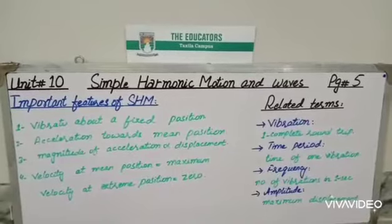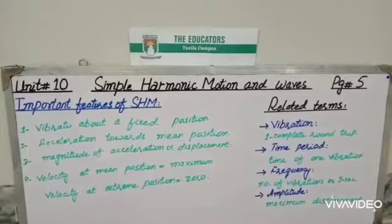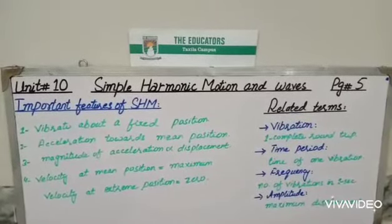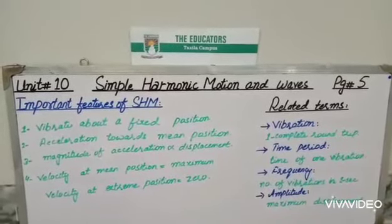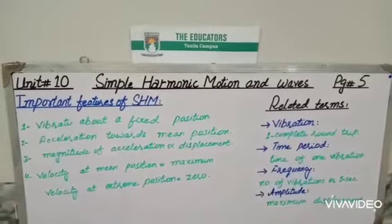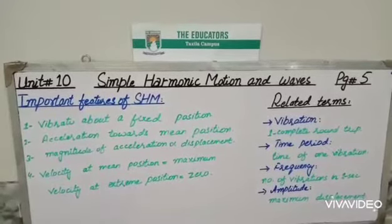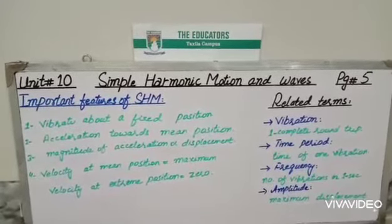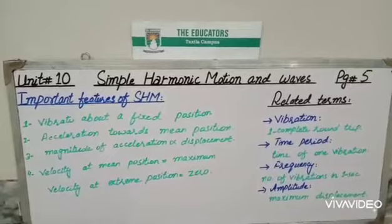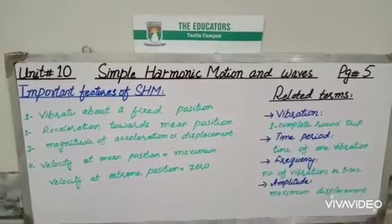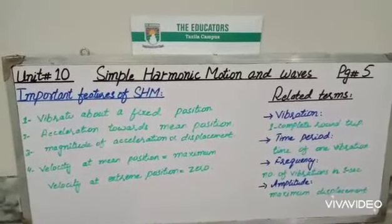The first feature, reading from the book: a body executing simple harmonic motion always vibrates about a fixed position. This means a body always vibrates or oscillates about a fixed position, which is called the mean position. The body repeatedly passes through this mean position to satisfy simple harmonic motion.